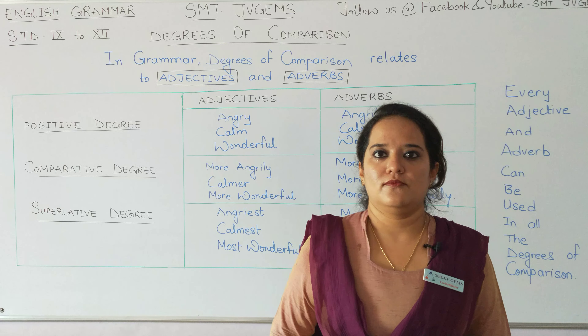Going to the superlative degree: angriest — it cannot be angryest, but it can be converted into angriest. Next is calmest. And most wonderful. If in the comparative degree we are using 'more', then in the superlative degree we will be using 'most'. So here again: most angrily. Most calmly. Most wonderfully.